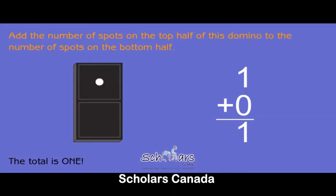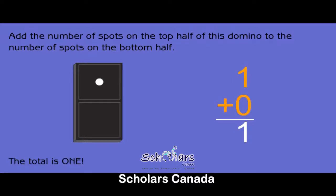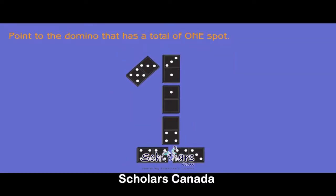Add the number of spots on the top half of this domino to the number of spots on the bottom half. The total is two. One plus zero equals one. Point to the domino that has a total of one spot.